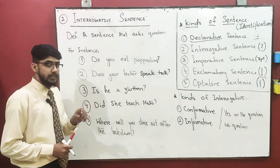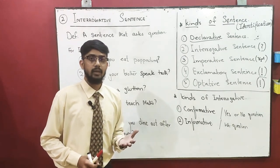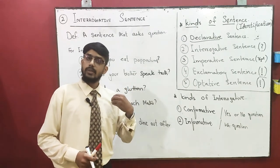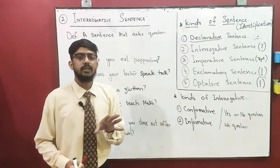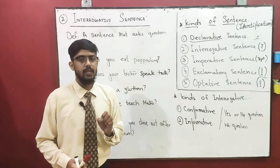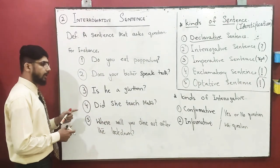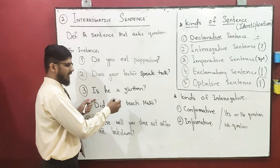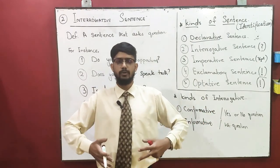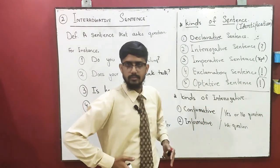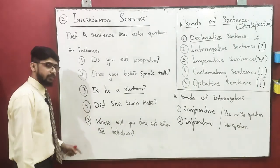One very important thing for all of you to understand: whenever a sentence starts with a helping verb, it gives the meaning of 'kya' in Urdu — kya aap khana khate hain, kya aap sach bolte hain, kya aap apne waldain ki itaat karte hain. All these sentences are called confirmative sentences, which I will explain after completing the examples. The third example is: 'Is he a glutton?' — a glutton is one who eats a lot, someone with a big belly.